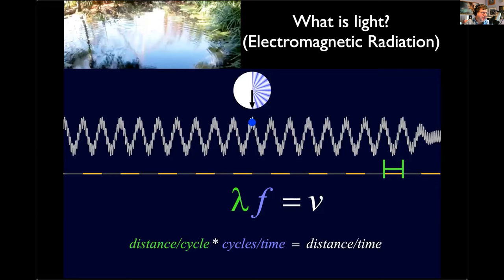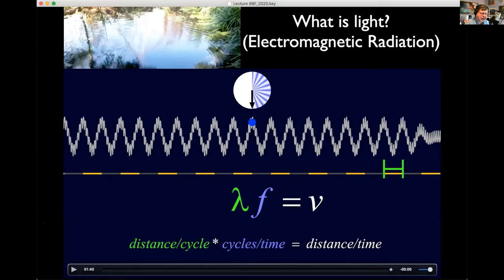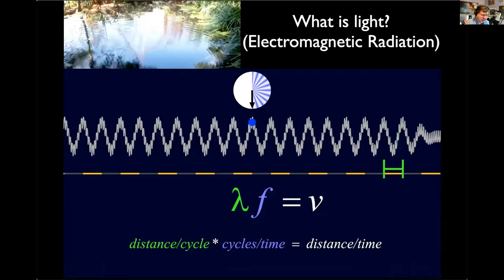If there was an electric field around me and I was charged, I would be either moving towards it or away from it. Between two magnets there's a field you can't see — and there it is. Light is just taking those invisible fields and moving them. It's a hard concept to understand because it violates common sense, but it's the way our universe works.